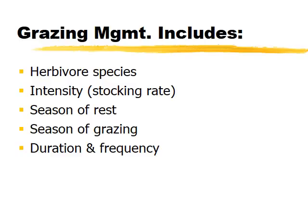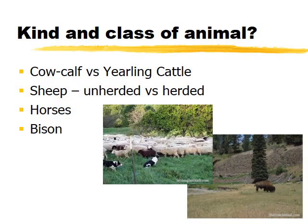The variables we can manage in grazing systems to affect riparian areas include: which species of animal to select, intensity or stocking rate, season of rest and season of grazing, and duration or frequency of grazing. Cow-calf operations tend to be harder on the landscape — older cows use riparian areas more and are less mobile than yearling cattle. Horses and bison are both considered relatively hard on riparian areas.